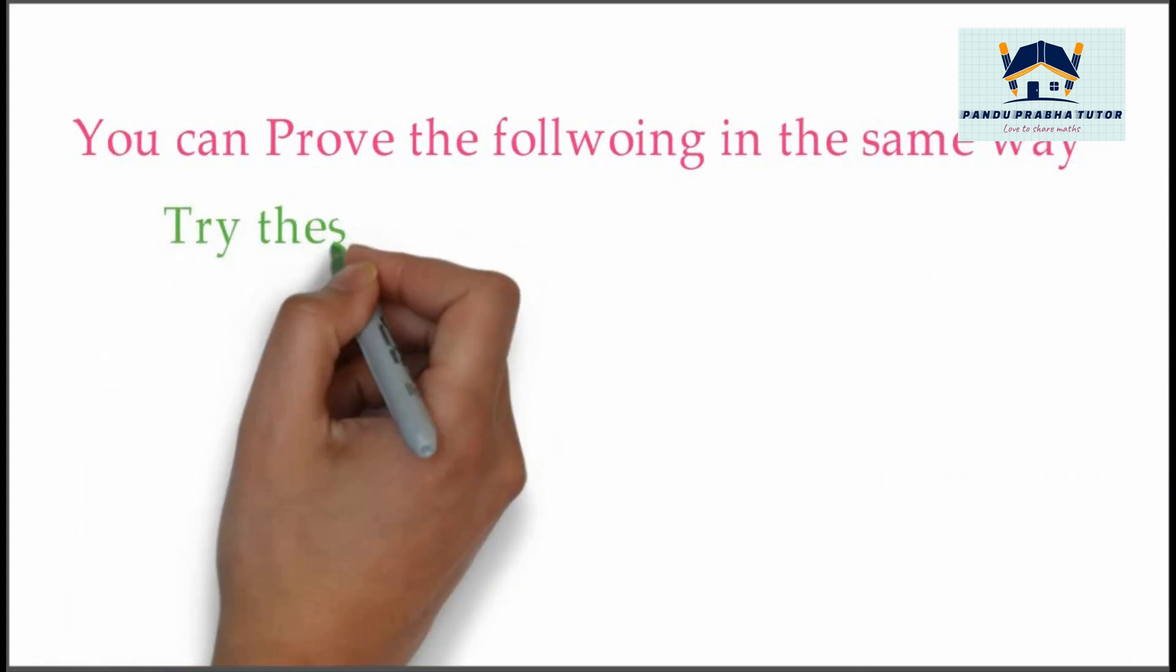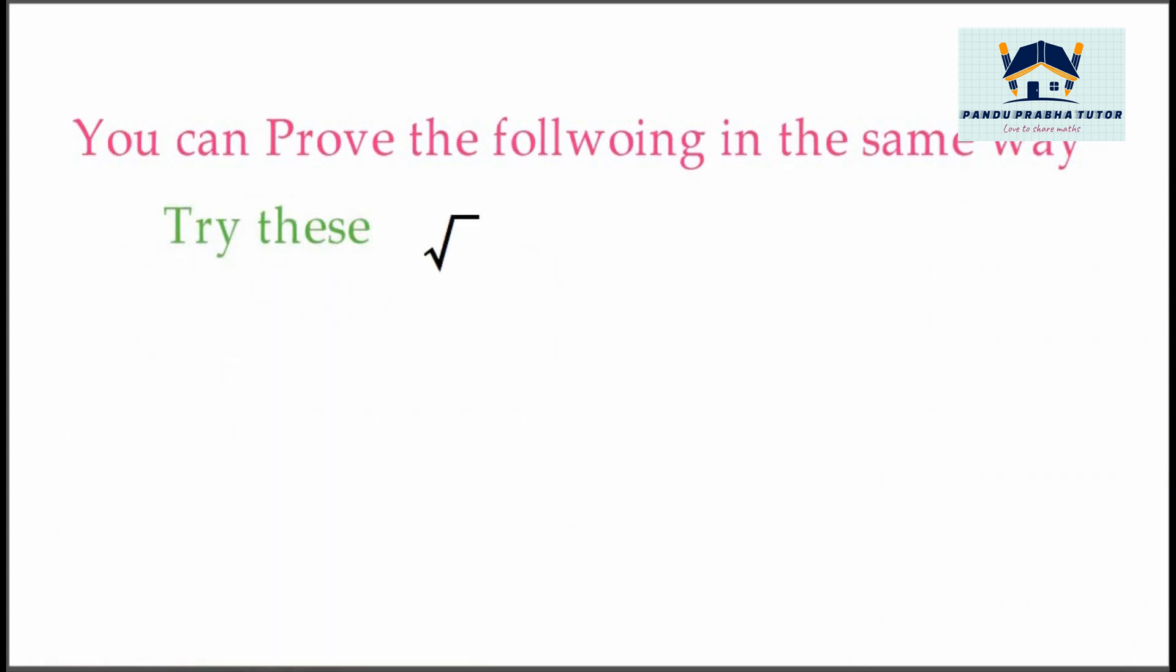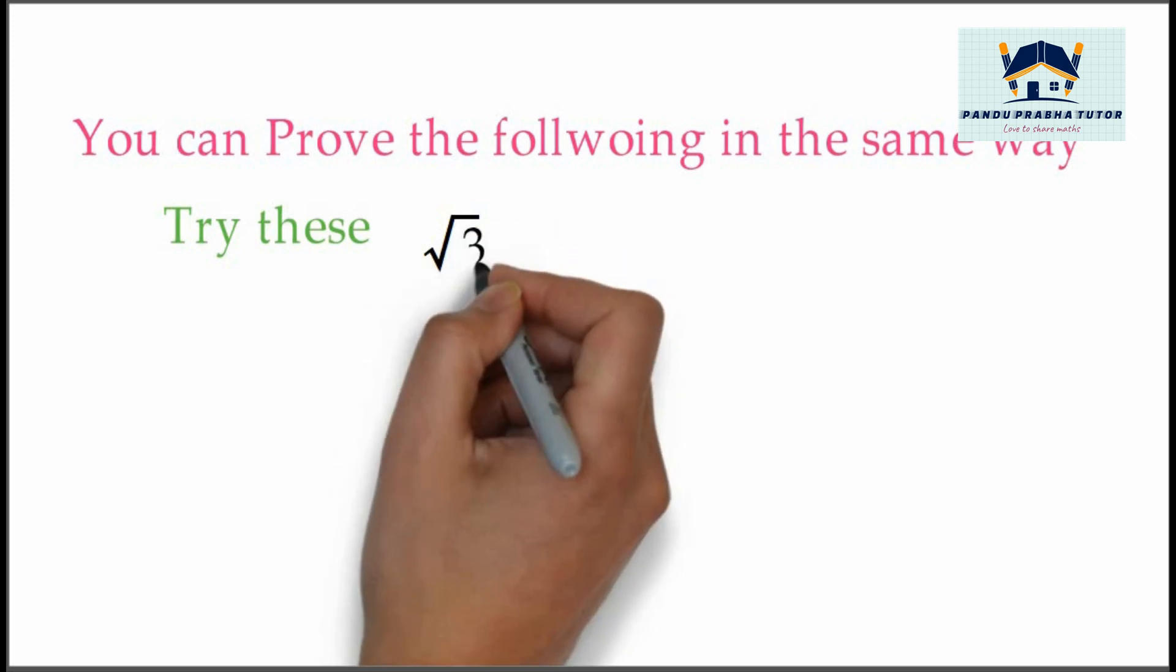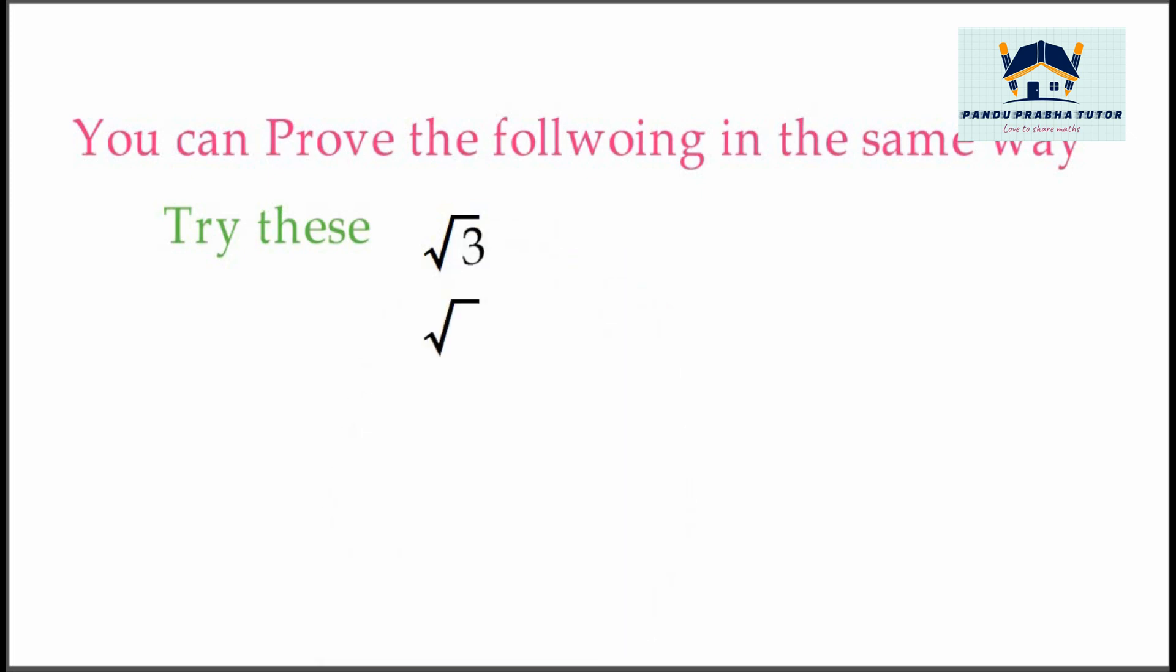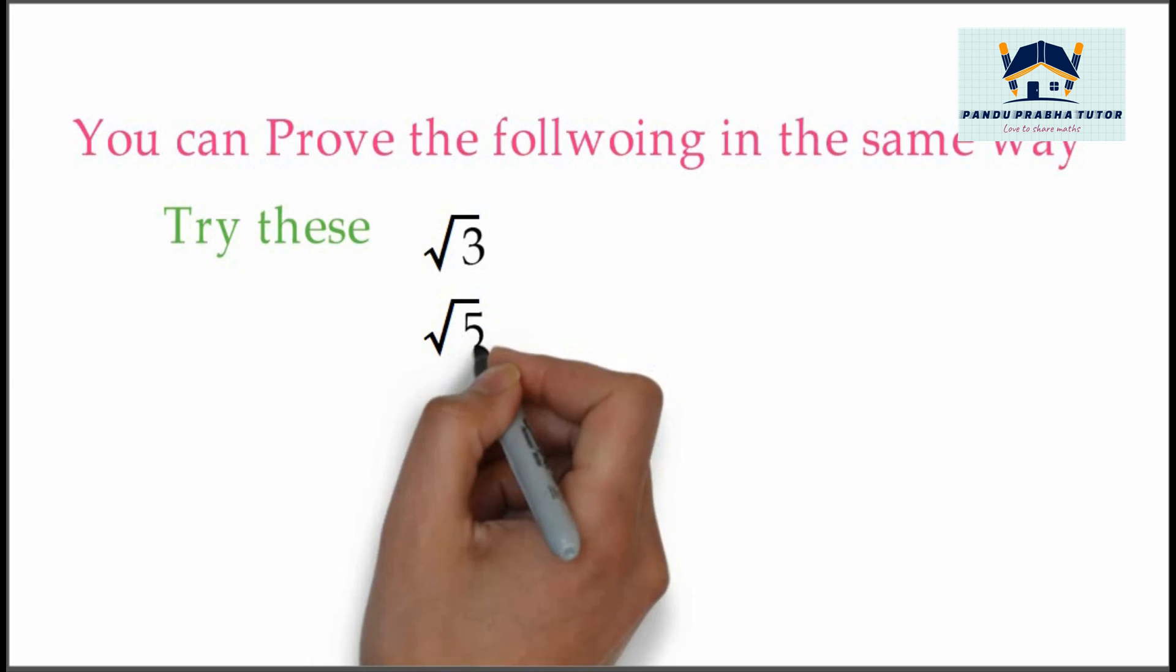We can prove the following irrational numbers in the same way: √3, √5, and √7.